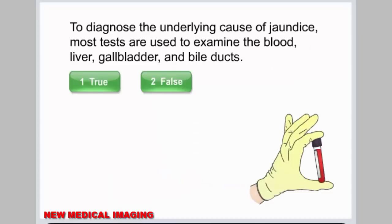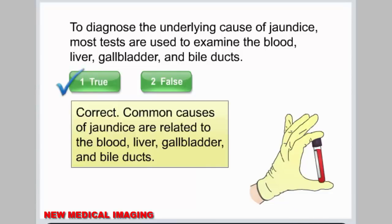To diagnose the underlying cause of jaundice, most tests are used to examine the blood, liver, gallbladder, and bile ducts. Common causes of jaundice are related to the blood, liver, gallbladder, and bile ducts.